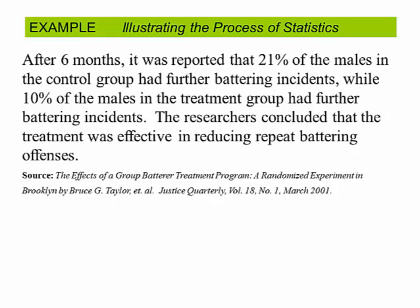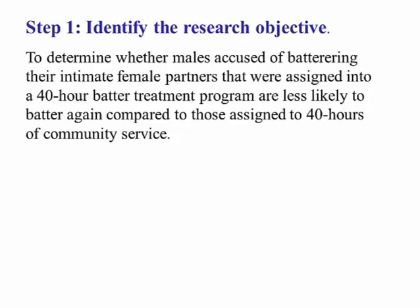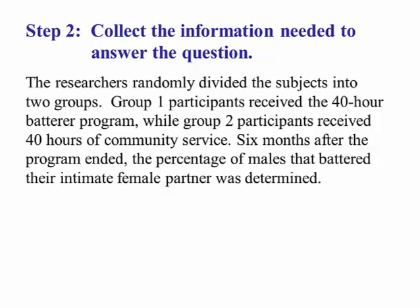In this example we saw all four steps in our statistical process. Step one, the research objective: the researcher believes that males accused of hitting their female partners are less likely to do it after going through a 40-hour batterers treatment program as opposed to just doing 40 hours of community service. The question is: does the battering treatment program help reduce the number of males who batter? Step two, we collected the data needed to answer the question. Subjects were selected into two groups: group one received the treatment — the batterer program — and group two received 40 hours of community service as the control group. Six months after the program ended, the percent of males that hit their female partners was determined.